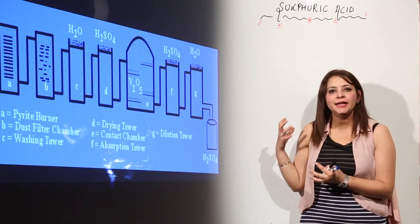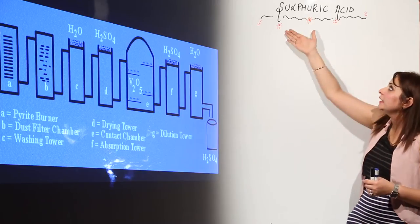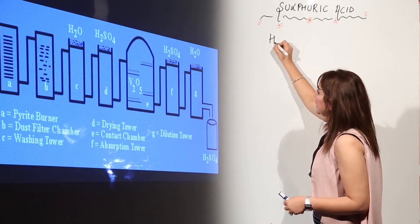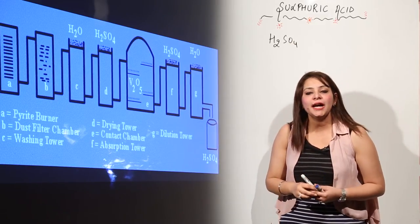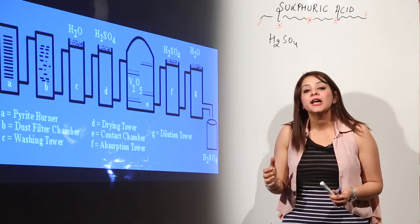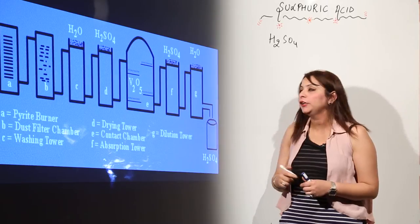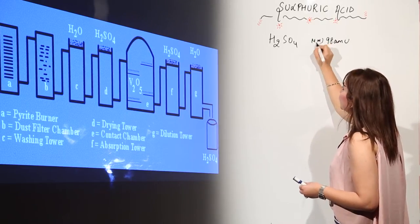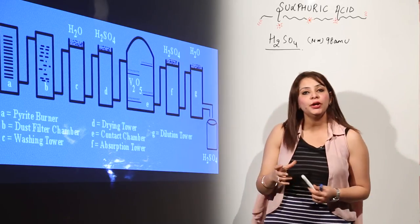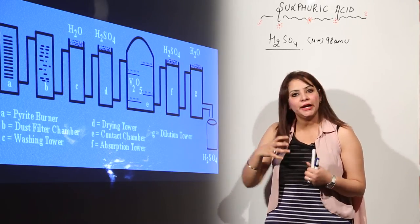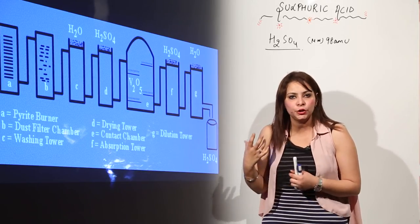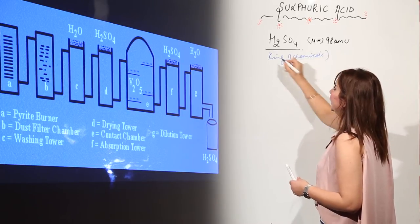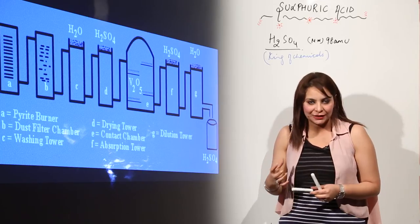We are going to start with the detailed study of sulfuric acid. First of all, you should know the formula of sulfuric acid — it is H2SO4. The molecular mass of sulfuric acid comes out to be 98 atomic mass units. Sulfuric acid is called the king of chemicals because it is used in almost all industries.